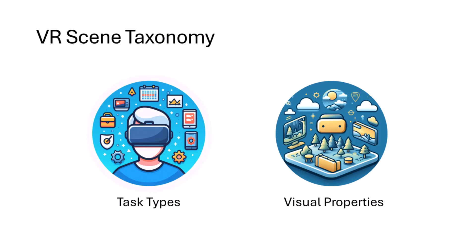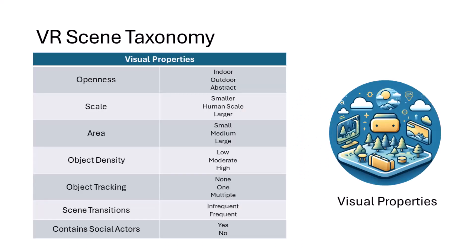Our taxonomy has two dimensions: visual properties and task types. Identifying the visual properties of a scene allows for more rigorous comparisons compared to category-based descriptions like describing a scene simply as a beach, or interaction-based descriptions like "this scene is walkable." We identify seven visual properties: openness, scale, area, object density, object tracking, scene transitions, and contained social actors.